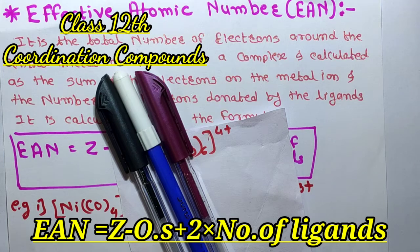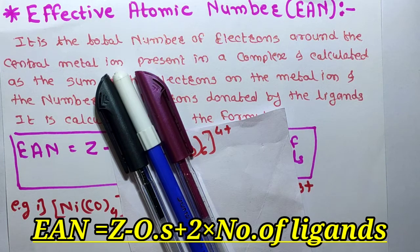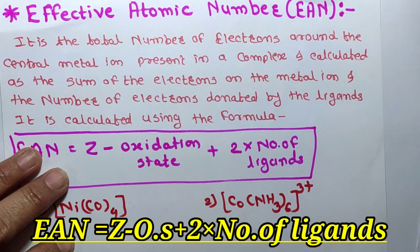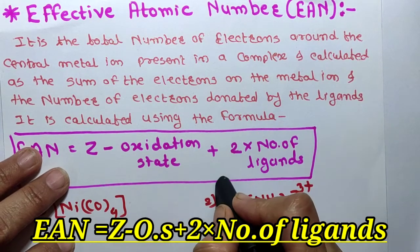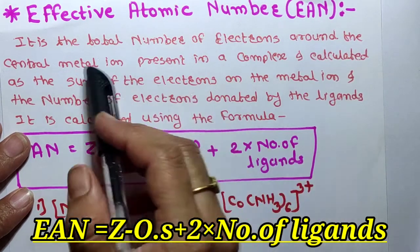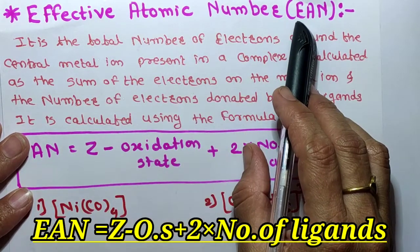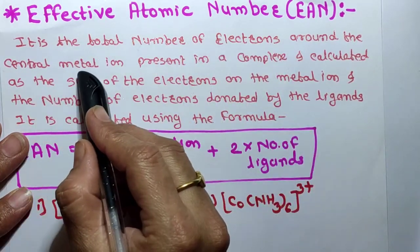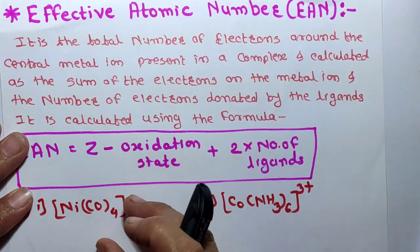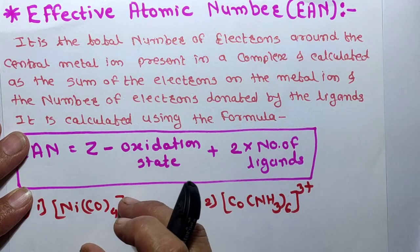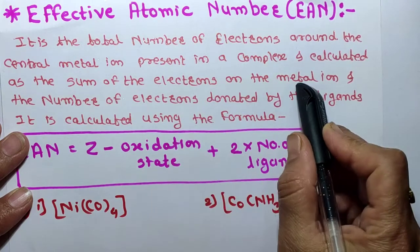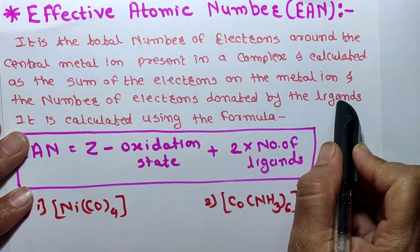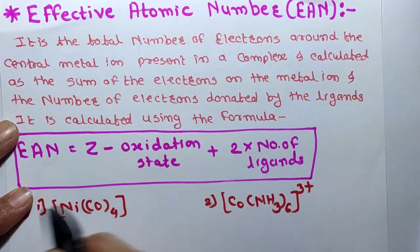Hello students, welcome to my channel. In this channel I will teach chemistry and maths in the simplest way. Today's topic is Effective Atomic Number, or EAN rule. The effective atomic number is the total number of electrons around the central metal ion. EAN can be calculated as the sum of electrons on the metal ion plus the number of electrons donated by ligands.